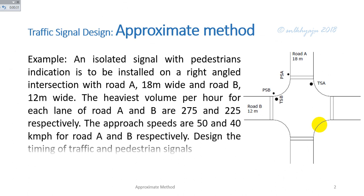An isolated signal with pedestrian indication is to be installed on a right-angle intersection with Road A of 18-meter width and Road B of 12-meter width. The heaviest volume per hour for each lane of Road A and B are 275 and 225 respectively. The approach speeds are 50 and 40 km per hour for Road A and B respectively.